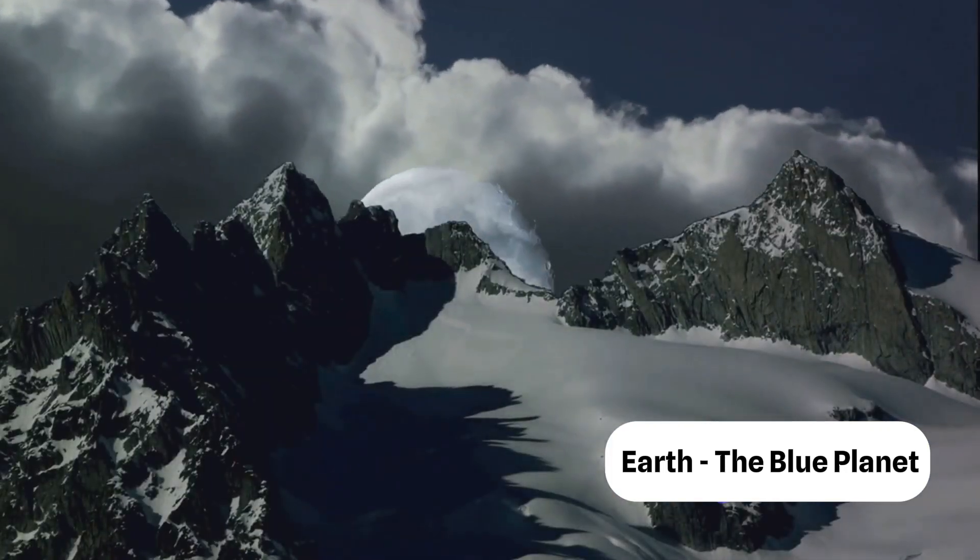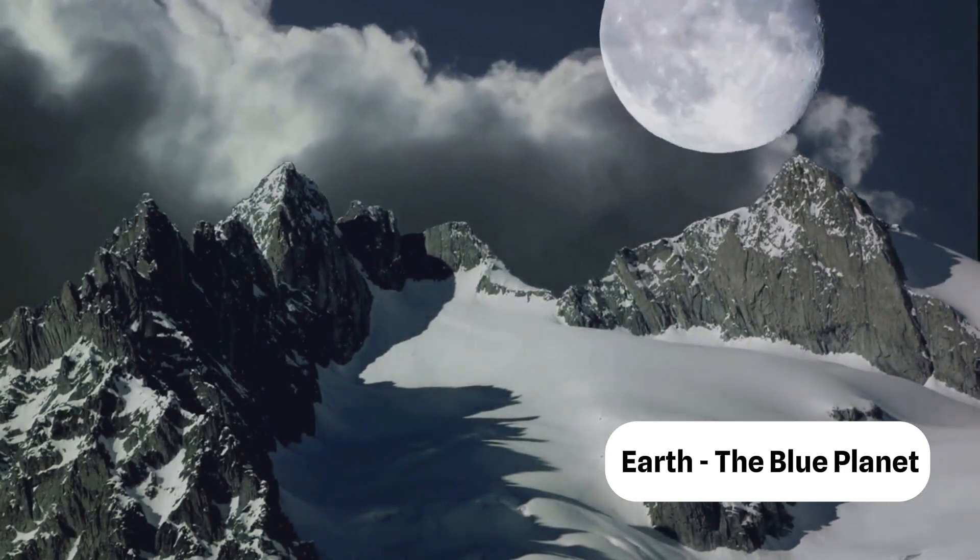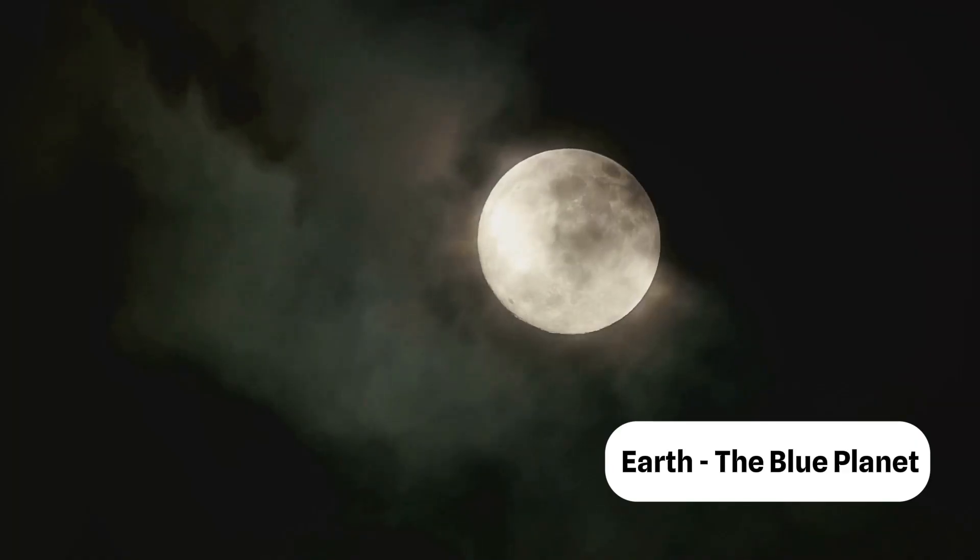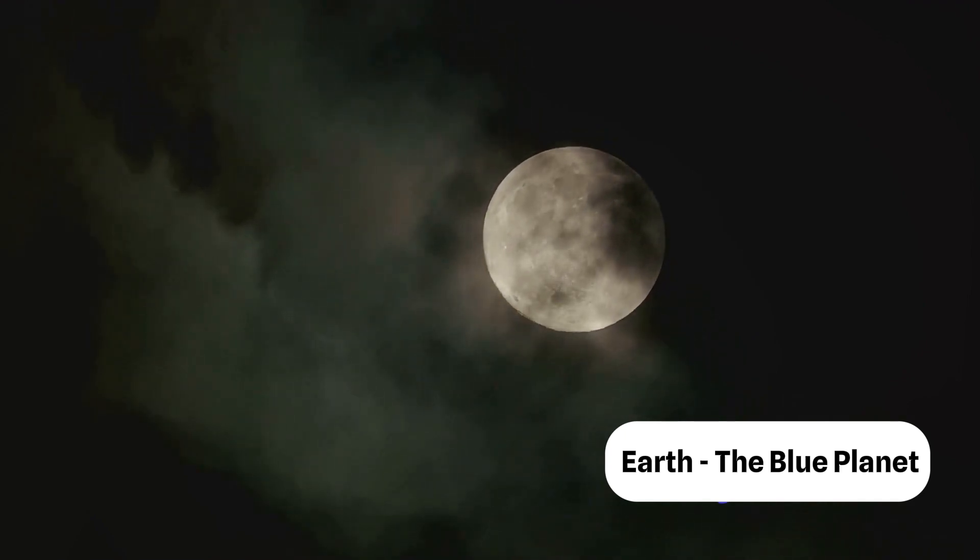And then there's the moon, our constant companion in the night sky. It's more than just a pretty sight. The moon's gravitational pull causes Earth's tides and stabilizes our planet's tilt, which in turn regulates our seasons.